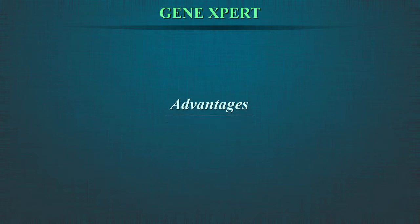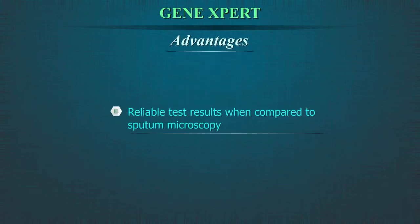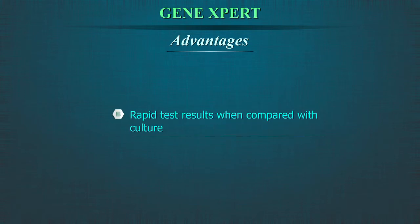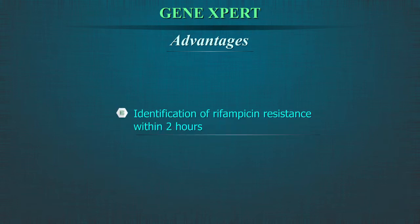The main advantages of the test are reliable test results when compared to sputum microscopy, and rapid test results when compared with culture. Although culture gives a definitive diagnosis, getting the result usually takes weeks rather than the hours of the GeneXpert test. Additionally, identification of rifampicin resistance is achieved within two hours, whereas normally getting any drug resistance result takes weeks rather than hours.